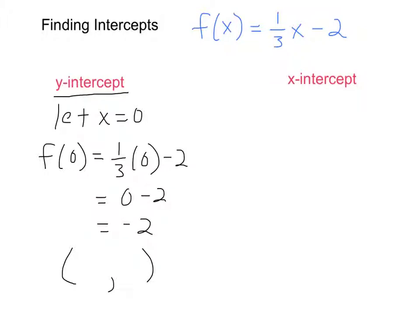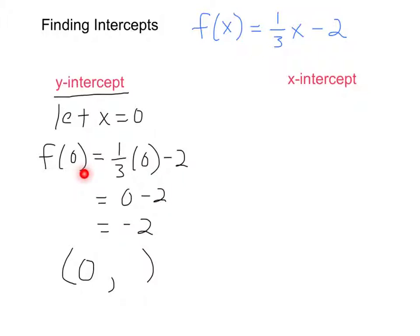We started by letting x equal 0, and when we solved we got y equaling negative 2. How do we know it's y? Because it's f of 0 — that notation always represents an output, or a y. So the y-intercept is the ordered pair (0, negative 2).